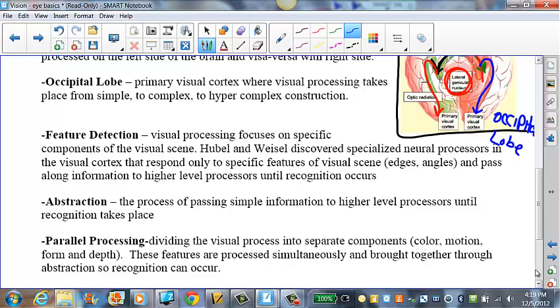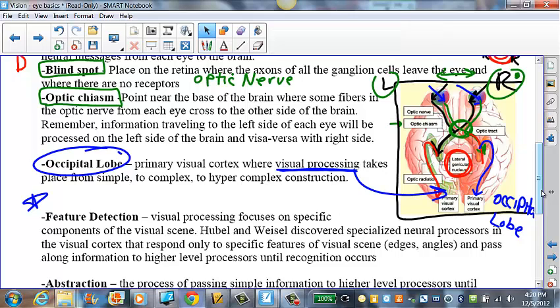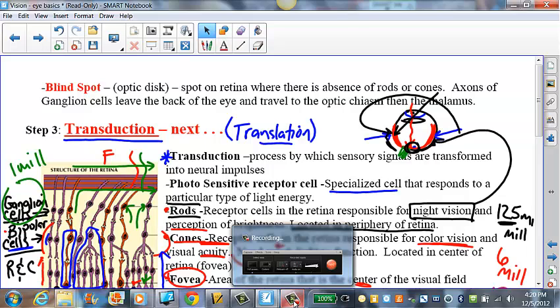That's our primary visual cortex. We just talked about the occipital lobe. That's the back part of our brain. That's where visual processing begins and takes place. And we'll talk about other types of visual processing, like feature detection, abstraction, and parallel processing at a different time. So those two videos together should help you understand primary visual processing. Please feel free to rewind. We will see you soon. Hope this helped.